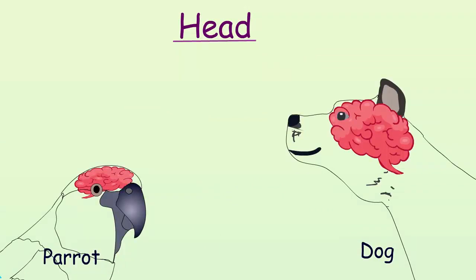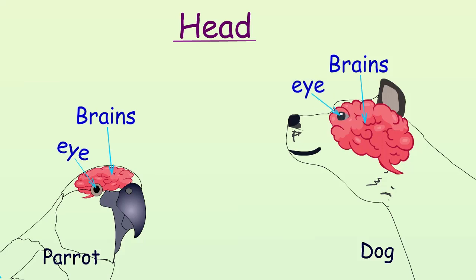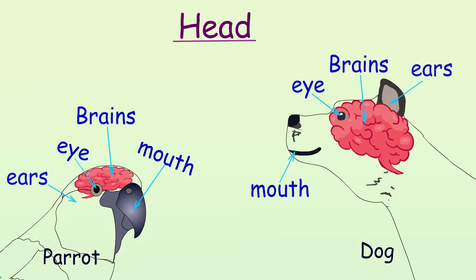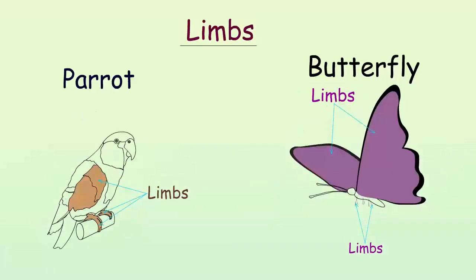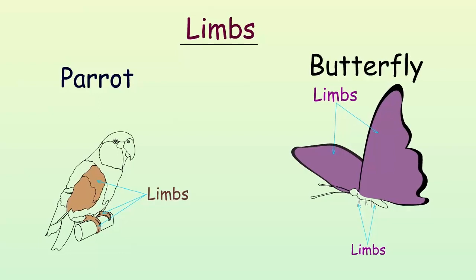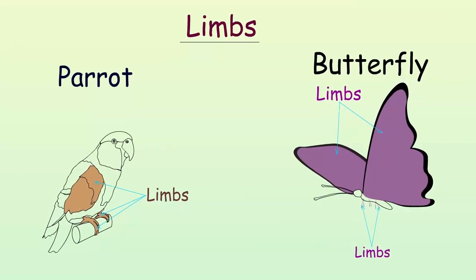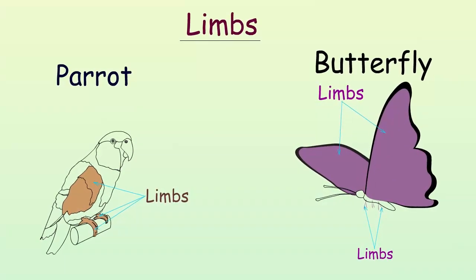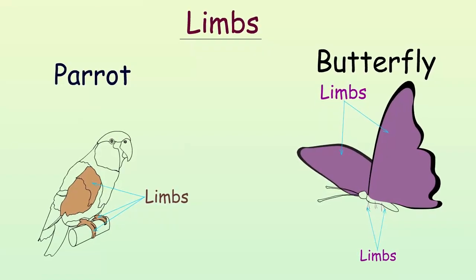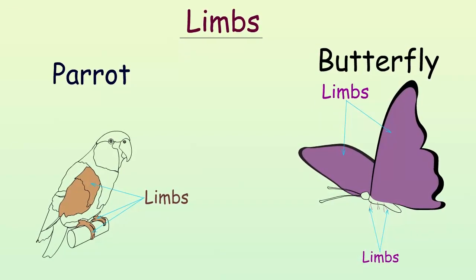The head of each animal is made up of the brain, eye, mouth or jaw, and ears. The limb of an animal is the part of the body used for movement, like walking, swimming, flying, and so on.